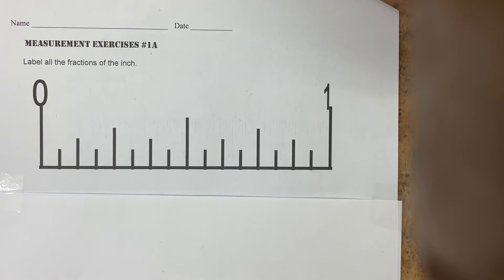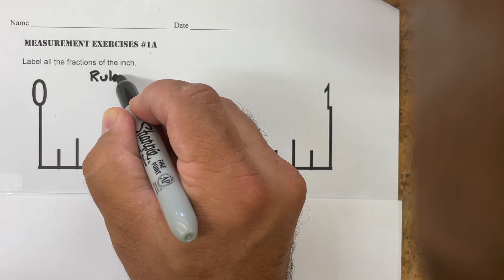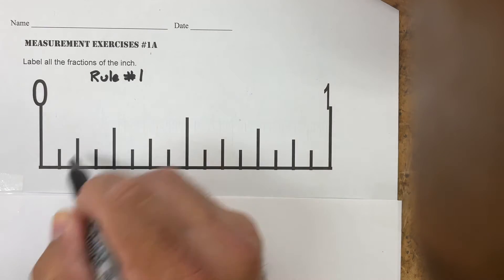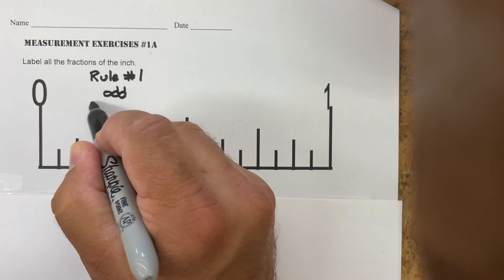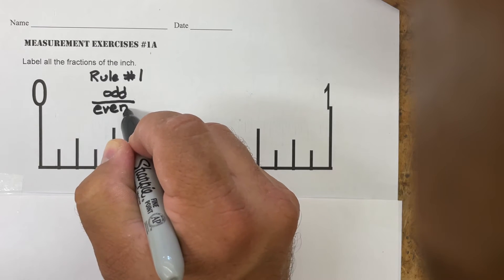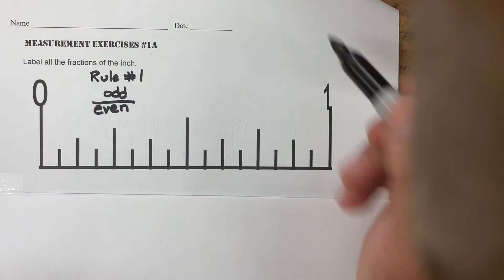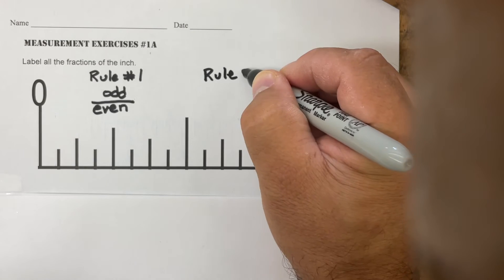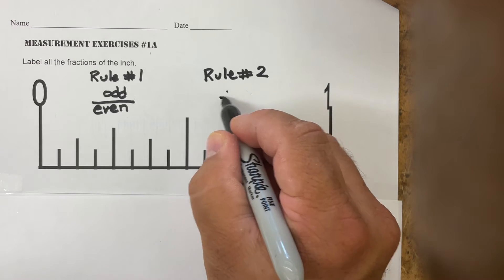There are two rules we are going to follow when measuring. If you follow these two rules, you can measure to any increment you want — the same rules will apply. Rule number one says that the answer must be odd over even. Rule number two says to divide by two.